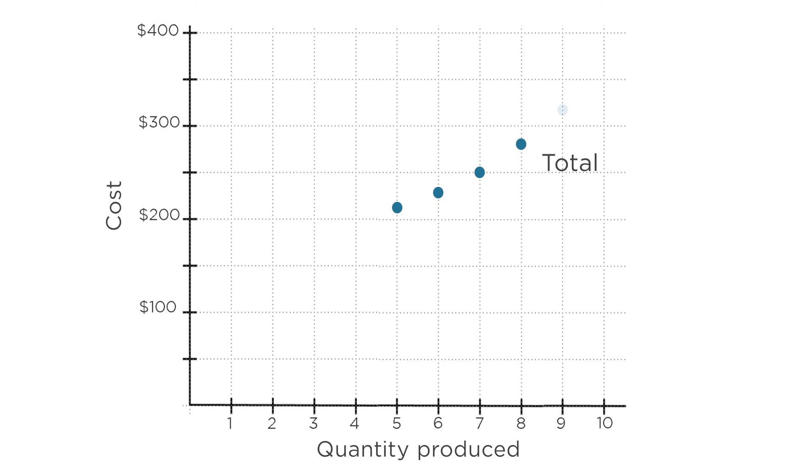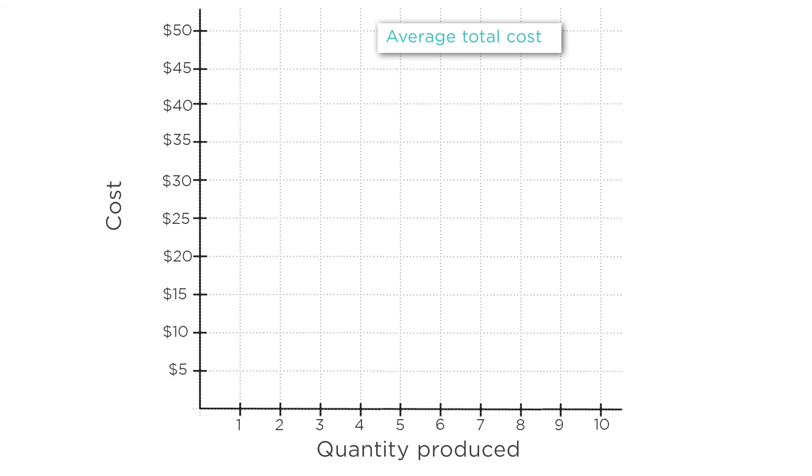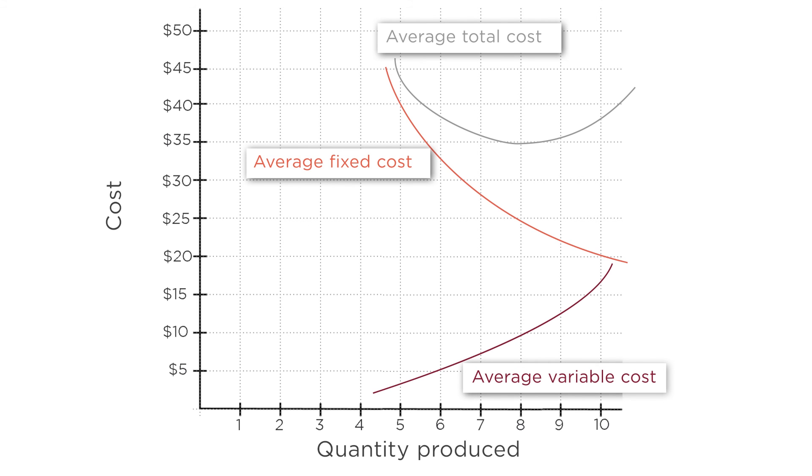In summary, the total cost curve shows the sum of the fixed cost and the variable cost. The average total cost curve shows the total cost divided by production. The average total cost curve can be decomposed into the average fixed cost curve, which is sloped downward, and the average variable cost curve, which is sloped upwards. The marginal cost curve shows the extra cost for an additional unit of output at each production level. We've assumed that marginal costs are increasing, so this curve would slope upwards. When drawing cost curves, don't forget to have marginal cost curves intersect the average total cost curve at the lowest point on the average total cost curve.